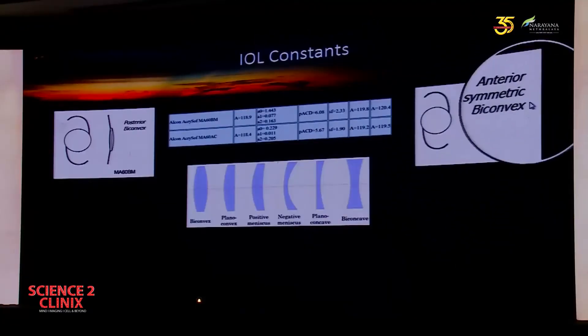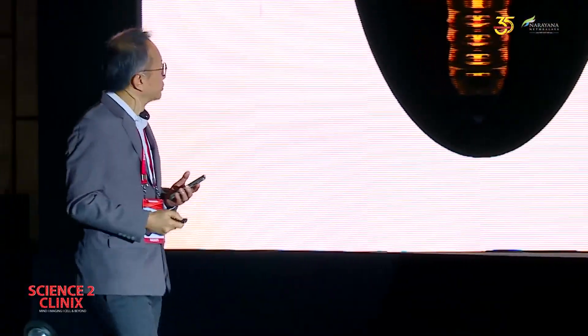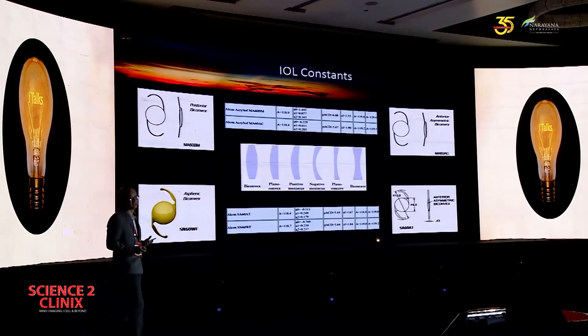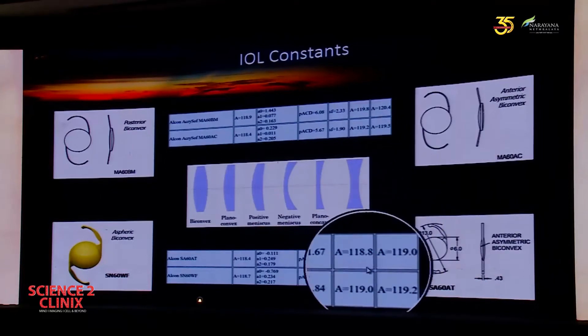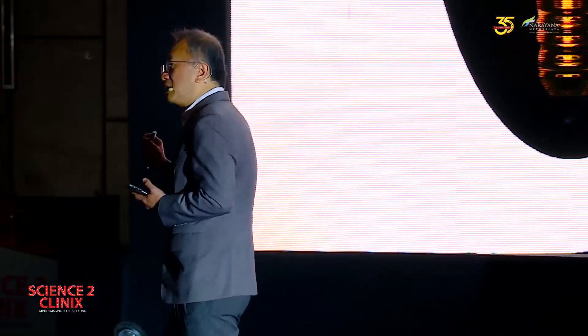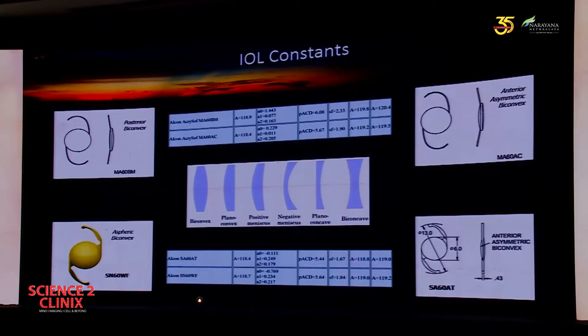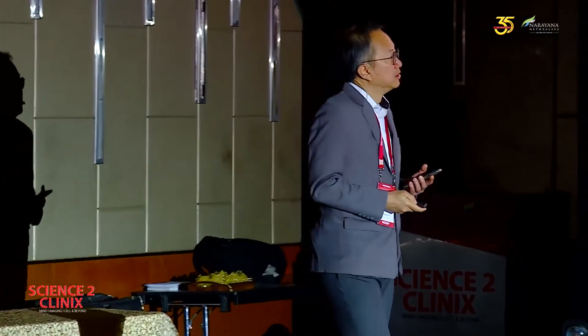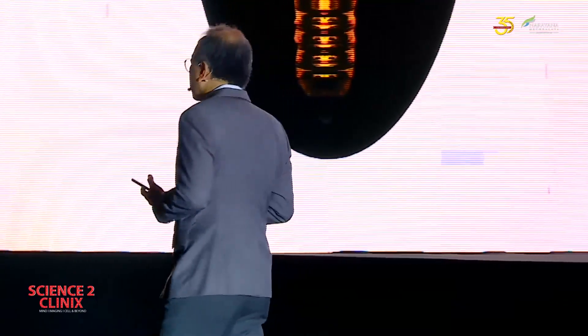For example, the thicker the lens, the A constant actually changes because A constant is something physical and somewhat arbitrary. Another example: aspheric versus non-aspheric. The A constants are 118.8 and 119 — they are similar lenses, but aspheric generally have a higher A constant than non-aspheric, because by design of the spherical aberration, the optical plane is slightly more posterior. Therefore the A constant must be a little bit higher. This essentially explains why different IOLs have different A constants — same IOL with different curvature and different optical design will have different A constants.